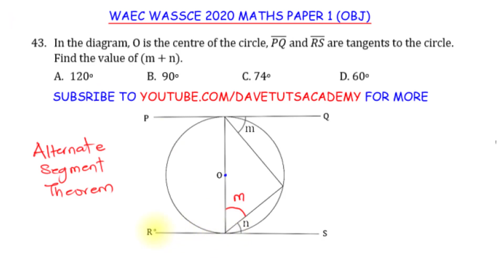In the other case, since we are also having the same feature here, the angle between this tangent and this chord given as N is also equal to the angle in the alternate segment — it is also equal to this angle given as N. That is the implication of the alternate segment theorem. Secondly, looking at this circle, the line from the two tangents PQ and RS passes through the center of the circle, so that makes that line the diameter of the circle.